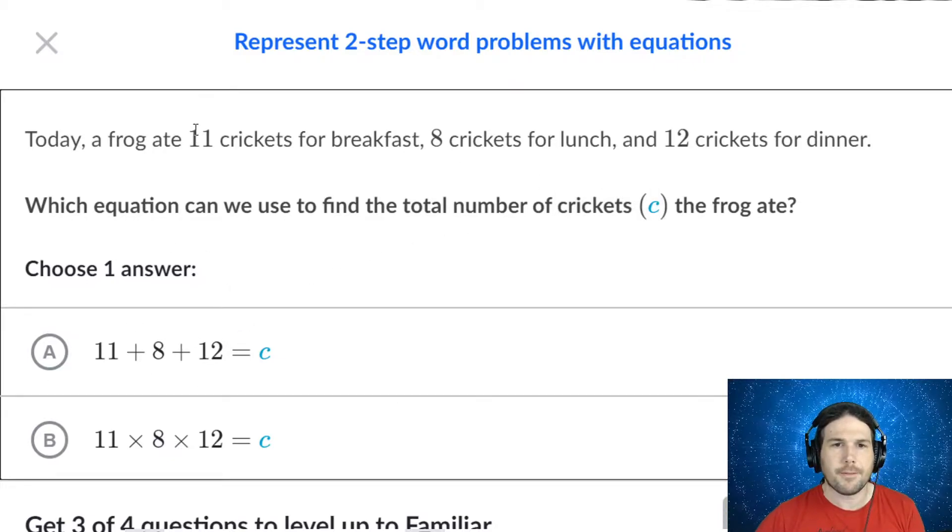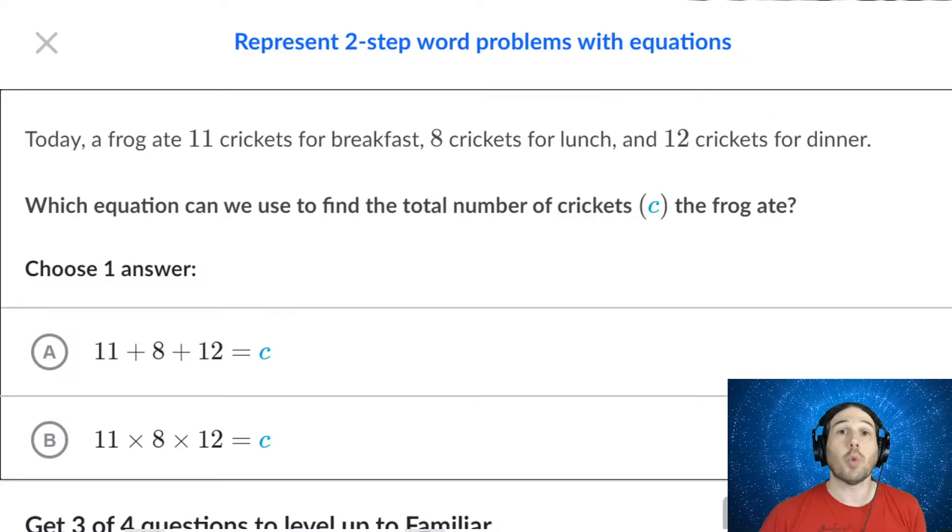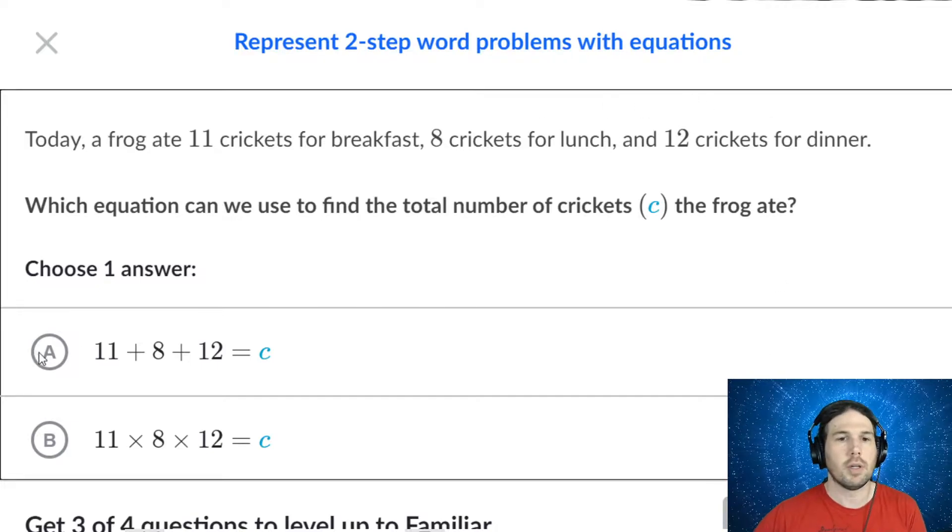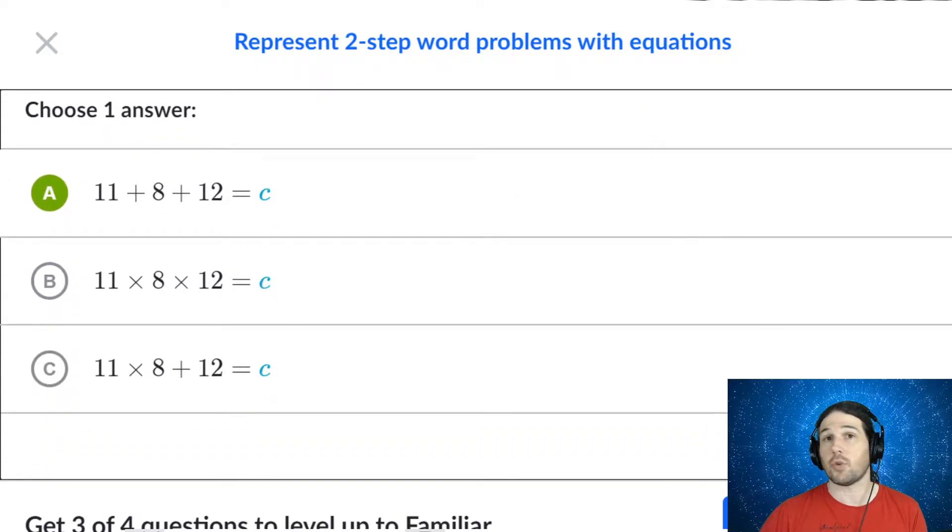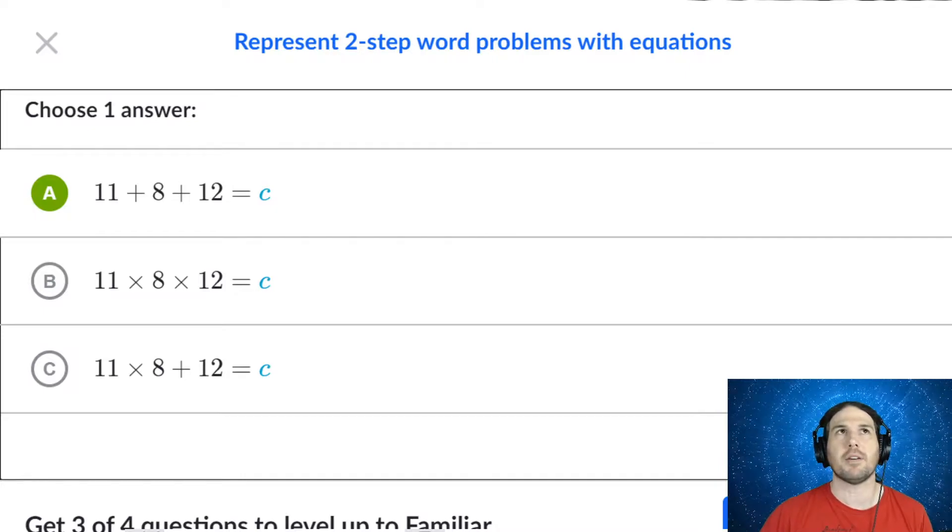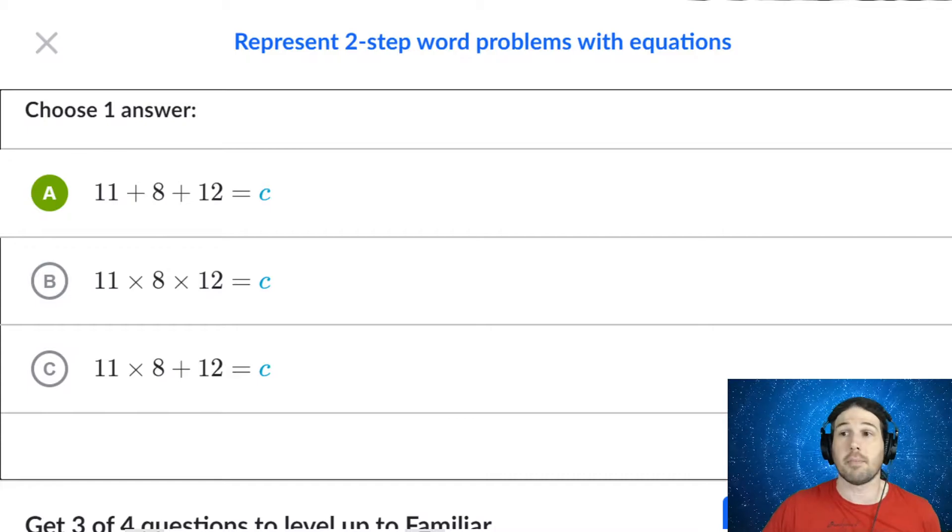So if the frog ate 11 for breakfast, 8 for lunch, and 12 for dinner, you add all those up to get the total. So we end up with C equals 11 plus 8 plus 12. There's no multiplication happening here. That would be if the frog ate the same number of bugs per day for a certain number of days.